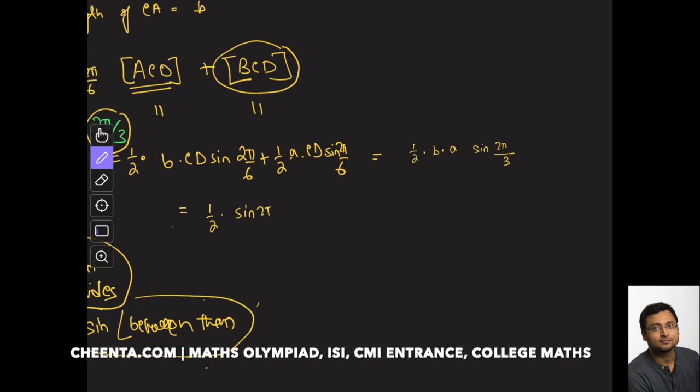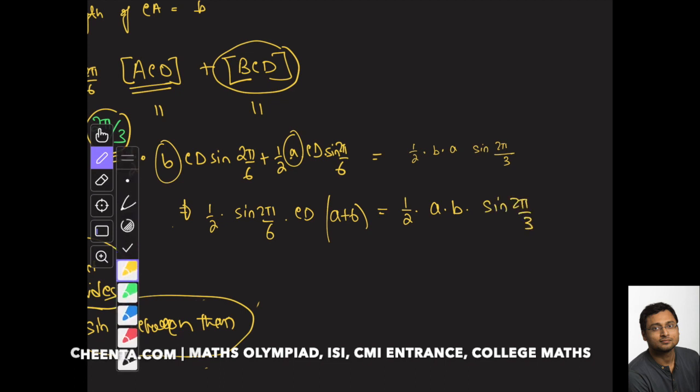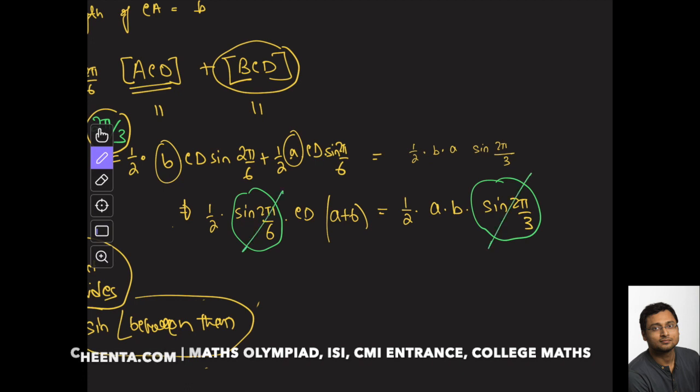We will have a plus b inside the parentheses, and here we have half of a times b times sine of 2π by 3. If you know a little bit of trigonometry, you'll know that sine of 2π by 6 and sine of 2π by 3 both have the same value. Half obviously cancels off, so we have CD equals to ab over a plus b. This is the final answer.